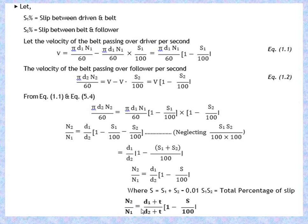Therefore, the final formula is: N2/N1 = (D1/D2) × (1 - S/100). If we also consider the thickness T of the belt, the formula becomes: N2/N1 = (D1 + T)/(D2 + T) × (1 - S/100). If the thickness is not given, directly use N2/N1 = (D1/D2) × (1 - S/100).